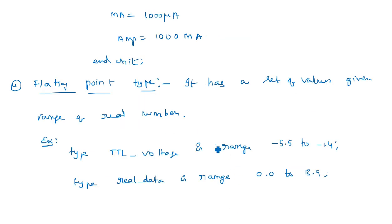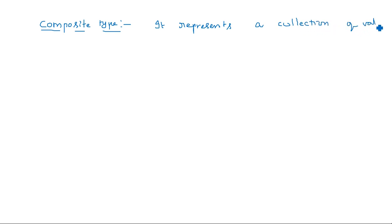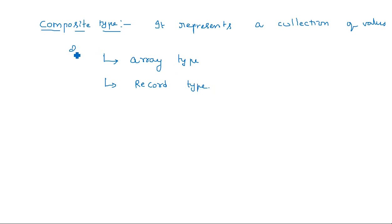Coming to composite data type, which is the third type in the classification of data types, it represents a collection of values. Composite types are classified into two types: array types and record types.